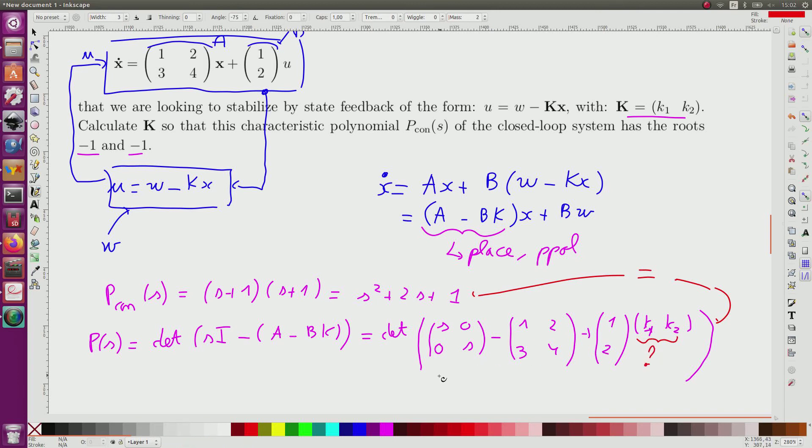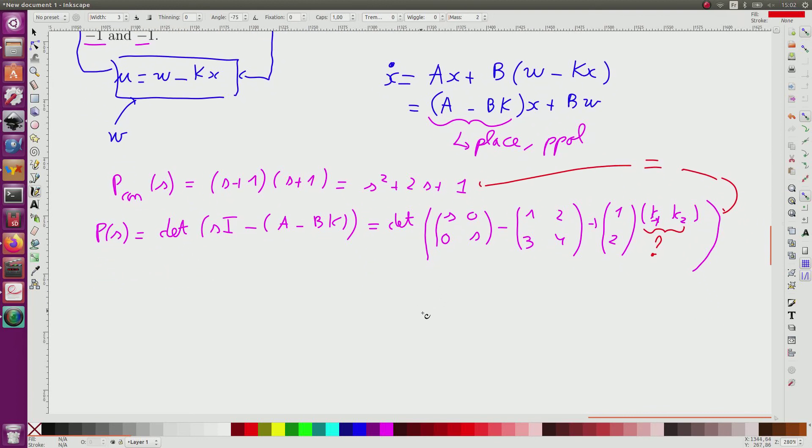Okay, so I compute the determinant. The determinant from this will be equal to the determinant of S plus K1 minus 1, K2 minus 2, 2, K1 minus 3, S plus 2K2 minus 4.